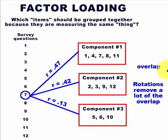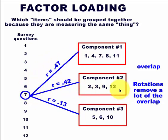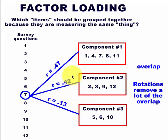Sometimes there's too much overlap between the two and that can become problematic. It's up to the researcher to decide which one of these items should be under which component. We could have put number seven under number two and the results would probably be minimal, but we never know for sure.